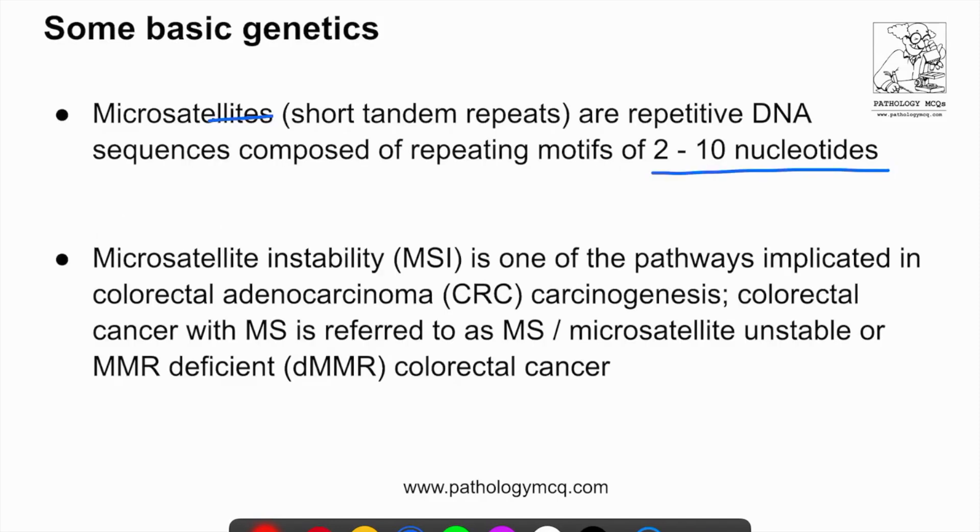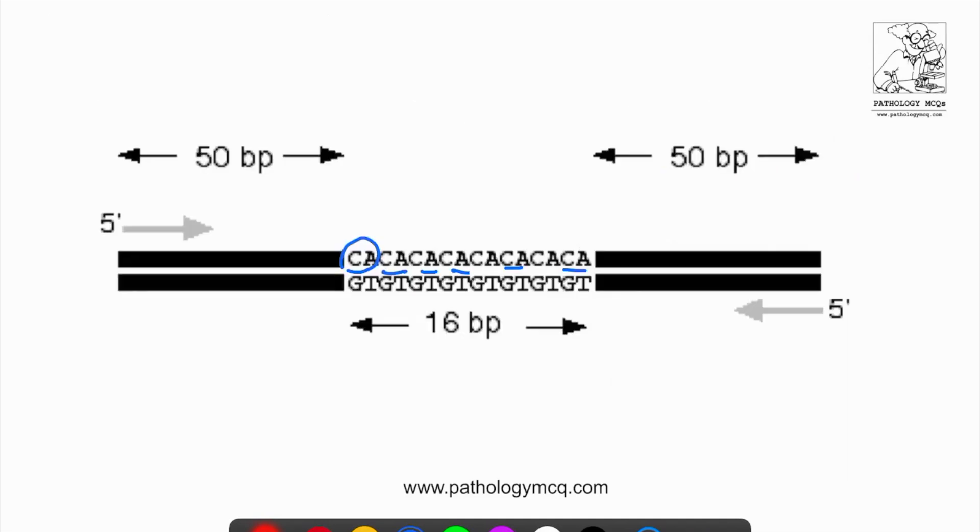Microsatellite pathway, this microsatellite instability which I'll be discussing. What is microsatellite instability? This is one of the pathways implicated in colorectal carcinomas and also endometrial carcinomas. We saw that these are short repeats and they come over and over again. These short repeats are very much prone to mutation. When they are very much prone to mutation, one of these base pairs may be changed by another base pair.